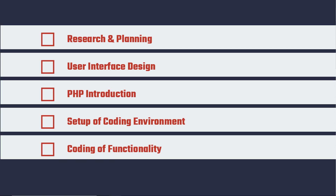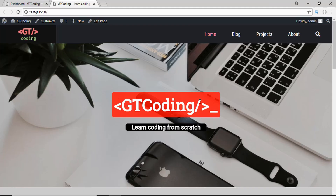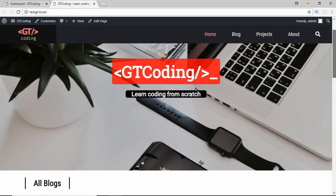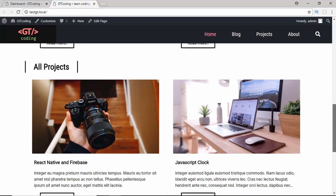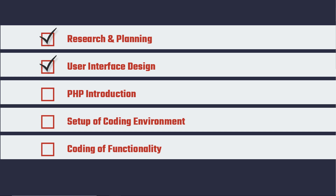This course is divided into five different modules. In the first module we are going to do some planning and research to design this website — looking at fonts, colors, and where we get our images from. In the second module we are going to design the UI of this website in HTML, CSS, and a little bit of JavaScript. We are not going to add any PHP code in the second module.